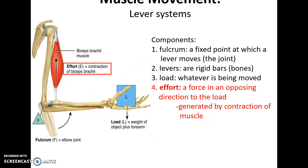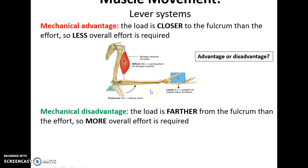Lever systems are physics concepts that relate to muscles. The muscle is generating force or effort — that's what the contraction is doing. The levers of a lever system are the bones themselves. The fulcrum is the joint where the movement is occurring, and the load is whatever is being moved, part of the body or something on or being held by that part of the body. Mechanical advantage is when the load is closer to the fulcrum than the effort, meaning you can use less energy to move that object. Mechanical disadvantage means the load is further away from the fulcrum than the effort, requiring more energy to move the load.